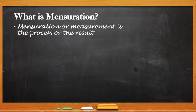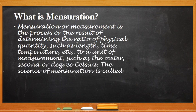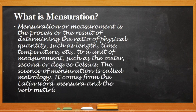Mensuration or measurement is the process or the result of determining the ratio of physical quantity such as length, time, temperature, etc. to a unit of measurement such as the meter, second, or degree Celsius. The science of mensuration is called metrology. It comes from the Latin word mensura and the verb metere.